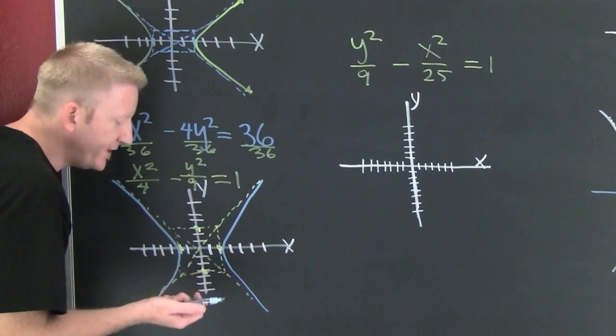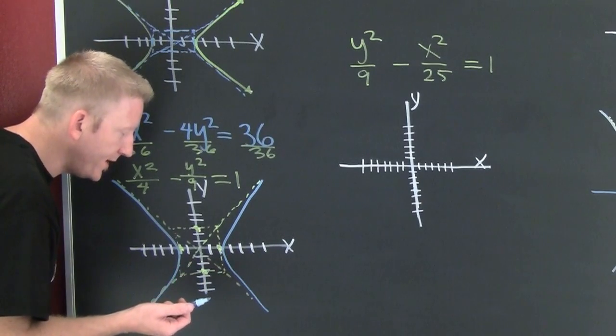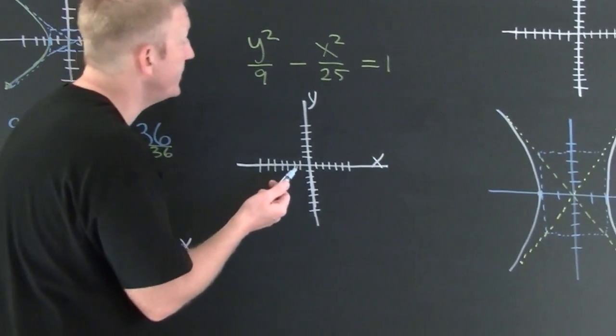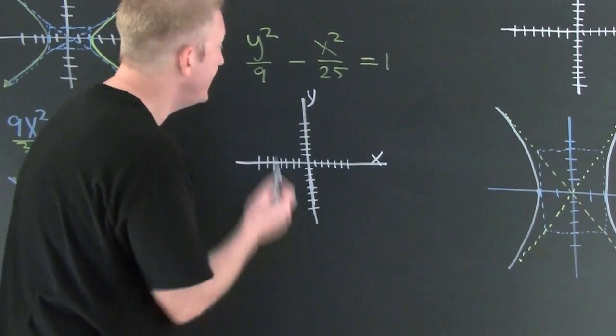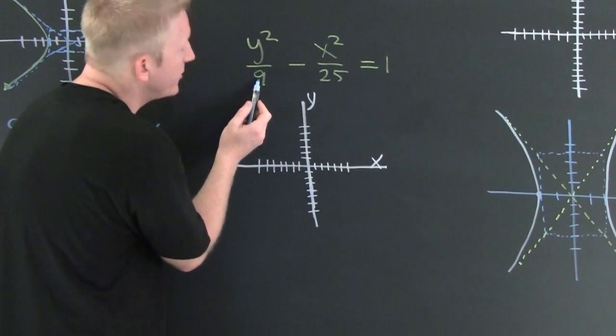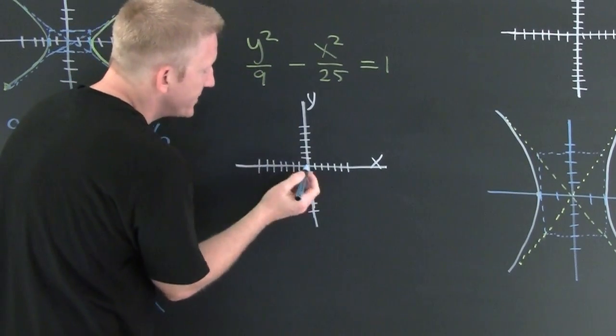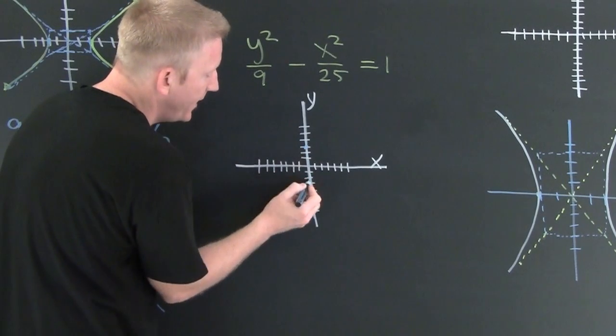Are we ever going to get an example where it opens the other way? Which brings me to my next example. Here, under Y I have nine, so I'm going to go up three and down three.